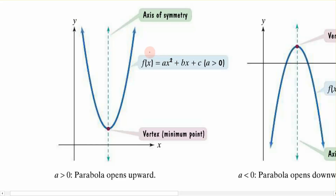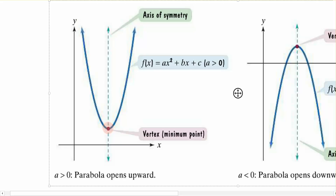Another thing we want to talk about is the leading coefficient a. When a is positive, my function faces up — it points up, and you can see that here. At the bottom of the function, right where it changes direction, we call this the vertex. The vertex in this case is a minimum, and the function is symmetric about a vertical line that passes directly through the vertex. This is the characteristic when the coefficient a is positive.